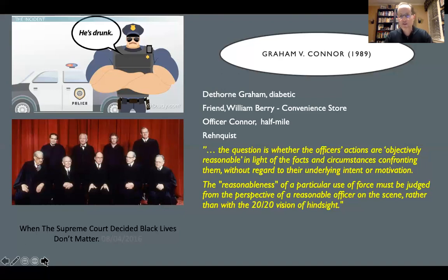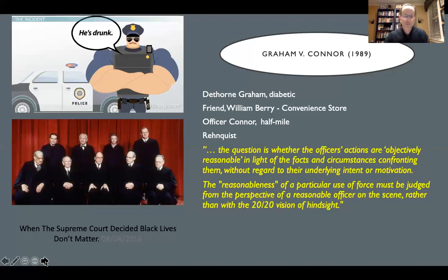Chief Justice Rehnquist writes the opinion: it's whether conduct is objectively reasonable in light of facts and circumstances, not looking at underlying intent or motivation. The use of force must be judged by a reasonable officer, not with 20/20 hindsight. On one hand this is perfectly logical, but two parts of this ruling trouble me. First, the facts and circumstances — on two occasions police were told Mr. Graham was diabetic. Second, underlying intent and motivation — we understand very well today the challenges of implicit bias. If you don't ask whether police treat people differently based on race, class, gender, or other implicit elements, it may be very difficult to guarantee equal treatment under the law.